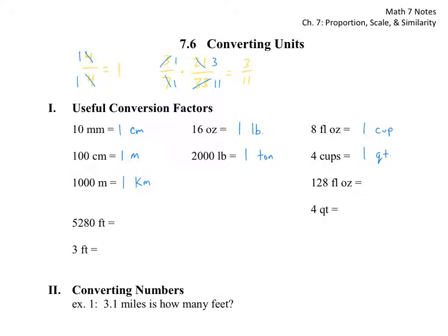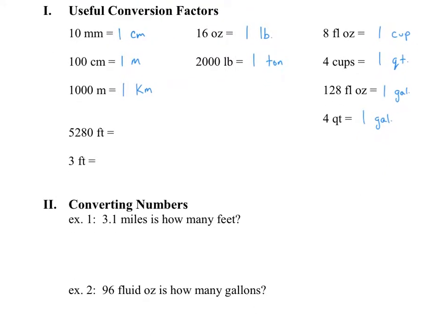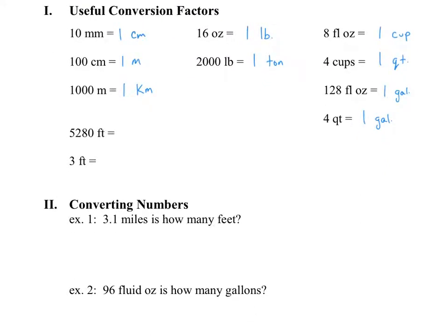128 fluid ounces—so they'll do fluid ounces, which then separates it from these ounces, which is going to be pounds—so 128 fluid ounces is 1 gallon. If you look at a 2 liter, you'll see 67.4 maybe, F-L-O-Z, so it's that many fluid ounces. And 4 quarts is also 1 gallon. So on the test, I'll give you whatever ones of these you need. But I'd keep this handy as you go through and do the homework. It'll help make the homework easier. So 5,280 feet is going to be 1 mile. And 3 feet is going to be 1 yard.